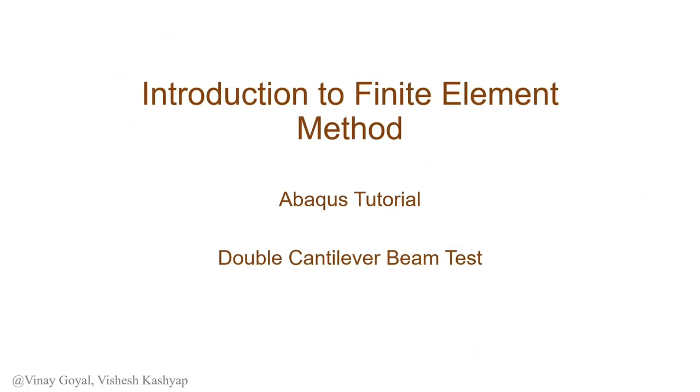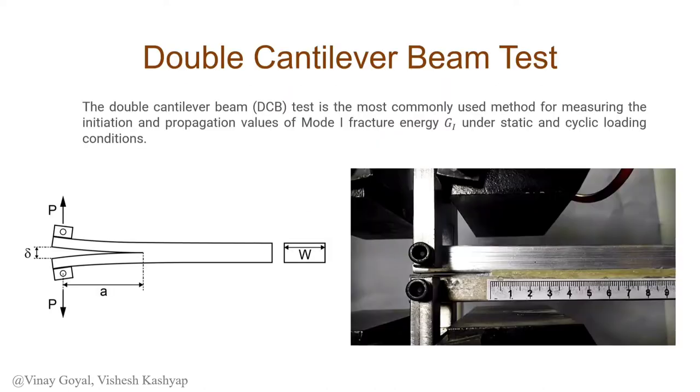Hello, everybody. Welcome to another Abacus tutorial in introduction to finite element method. Today, we're going to be learning how to simulate a double cantilever beam test. The double cantilever beam or DCB test is a very commonly used method to measure the initiation values and the propagation values for the mode 1 fracture energy of a material under static and cyclic loading conditions. This entails introducing an initial crack into a cantilever and then applying forces perpendicular to the direction of the crack to determine the fracture energy.